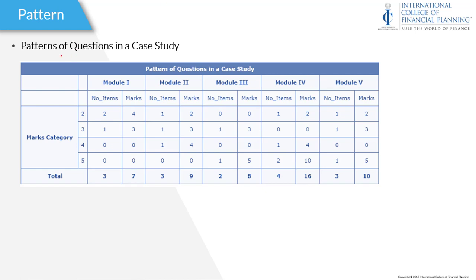This is the pattern of questions in the case study. In the final module, there is no 1-mark question — it directly starts from 2-mark, 3-mark, 4-mark, and 5-mark questions. From module 1, ITFP, the total number of 2-mark questions will be 2, and for 3 marks there will be 1 question. There are no 4-mark or 5-mark questions from the first module.